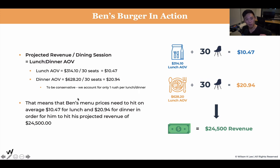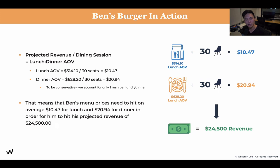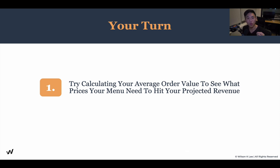This means that for Ben to hit his revenue goal of $24,500 per month, he needs customers to pay him on average $10.47 for lunch per person and $20.94 for dinner per person. This is how you come up with your ideal menu pricing in terms of average order value — it allows you to price your recipes accordingly to hit the numbers you're targeting. I understand this may be a bit confusing, so review this multiple times to understand the concept.